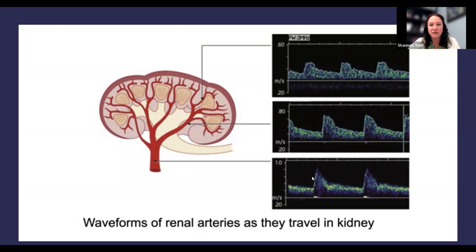I could make an analogy of the Rocky Mountains — a sharp upstroke — versus the Appalachians, where we have a rolling hill or the foothills. So sharp upstroke, early systolic peak, which ultimately gives us a short acceleration time.